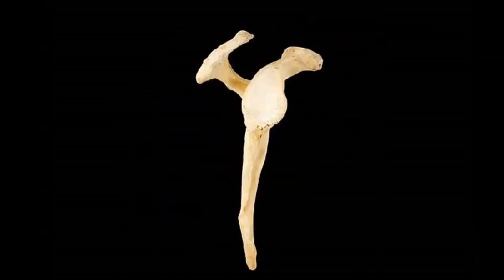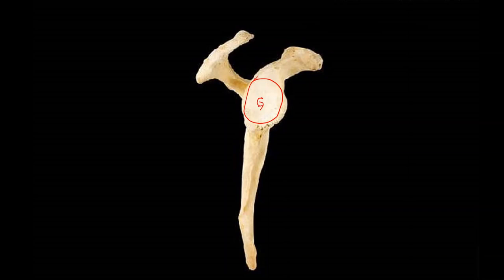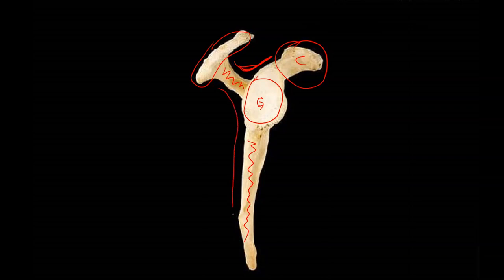This is a picture of the scapula from the lateral aspect, so it looks kind of bizarre. This is the glenoid cavity where the head of the humerus fits. This would be the axillary border along the armpit. Here is the coracoid process sticking out to the front, and here is the acromion process attached to the spine sticking out to the back. Here is the supraspinous fossa, here is the infraspinous fossa, and here in the front is the subscapular fossa.